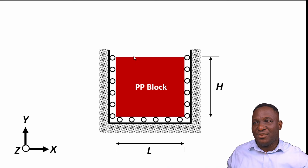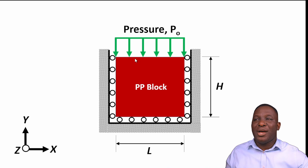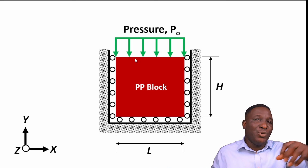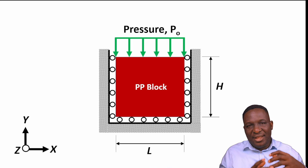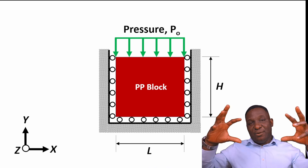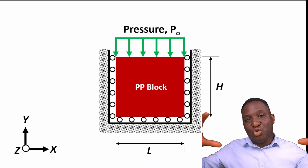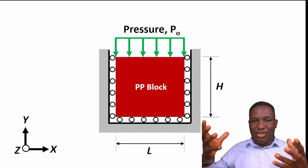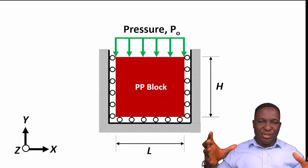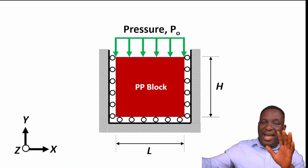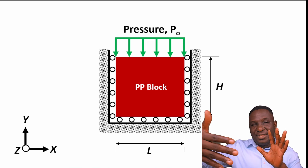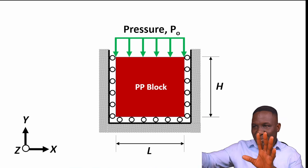The top surface, which is free, will have a pressure load applied right at the top of the system. The idea is that this system will then be constrained in every possible direction, and that also applies to the z-axis, which is the depth of this material.